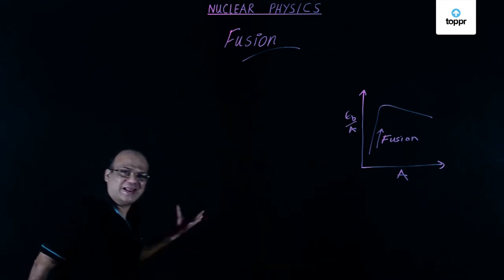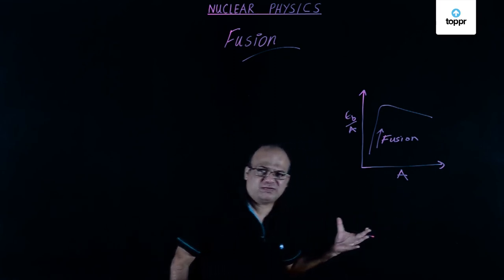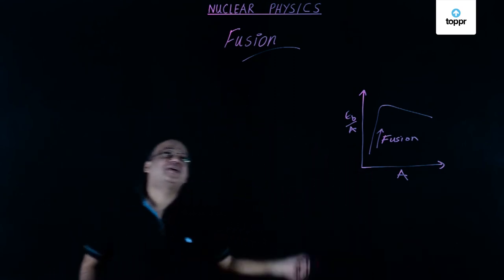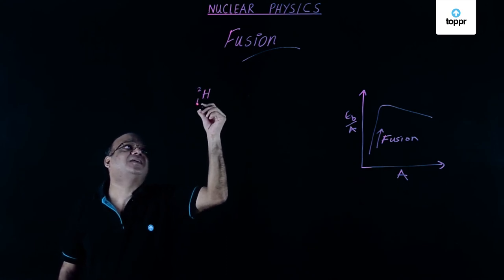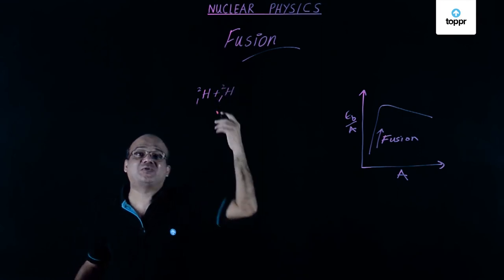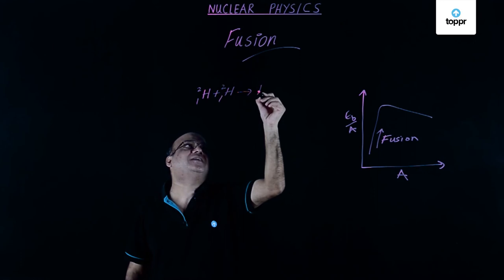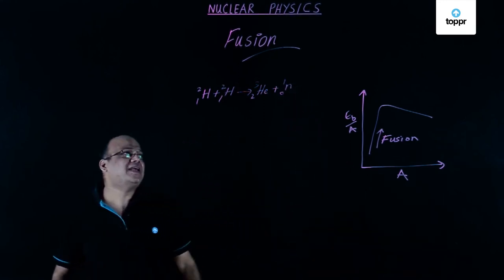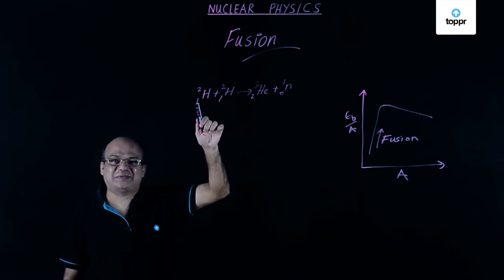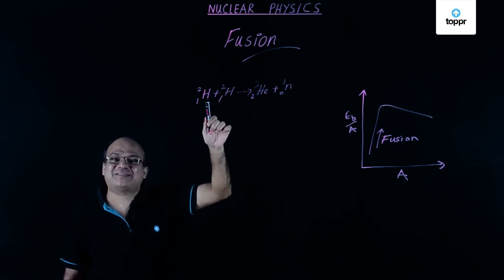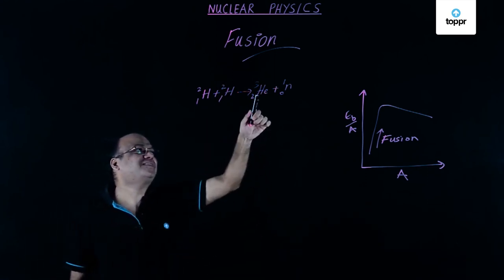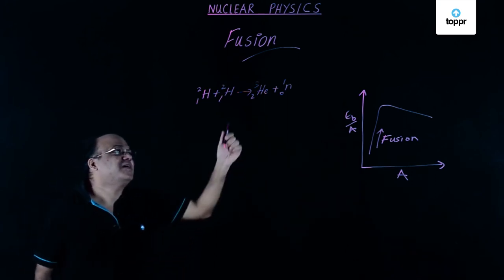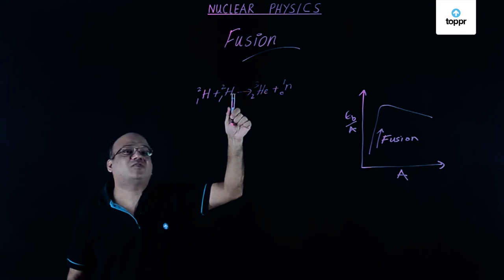Nuclear fusion is when two or more light nuclei combine to form a heavy nucleus. This is the source of energy in the sun, stars, and the hydrogen bomb. One example is two deuterium nuclei combining to form a helium nucleus plus one neutron. The binding energy per nucleon of helium is more than that of deuterium, and the combined mass of the products is less than the mass of the reactants — the difference is converted to energy.